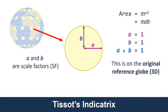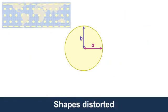This is on the original reference globe in three dimensions. If we take a map projection and see what happens to a circle at the equator versus at the poles, we can quantify the distortion using Tissot's Indicatrix and the scale factor in the two different directions.